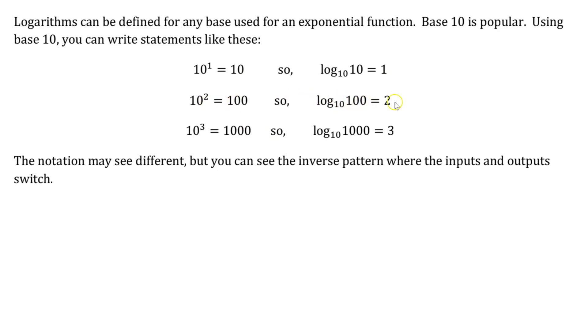Same thing in the final row. 10 to the third power equals 1000, the input is 3, output is 1000. Switch it in log form, the input is now 1000 and the output is now 3. So inputs and outputs get switched from exponential expressions to logarithmic expressions.